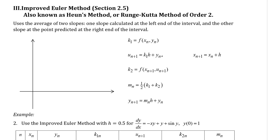In this video we're going to look at a modification of Euler's method which we looked at in the last video. It's in section 2.5 of our textbook called the Improved Euler Method. It has some other names that you might see if you look in other sources as well, but our textbook calls it the Improved Euler Method, so that's what we're going to focus on.